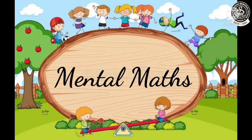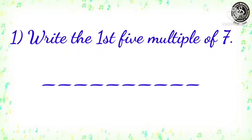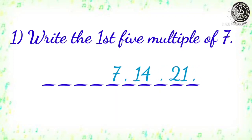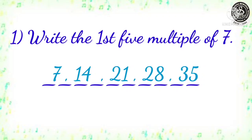Let us see question number 1. Write the first 5 multiples of 7, and your time starts now. Okay, time over. Let us see the answer: 7, 14, 21, 28, and 35.